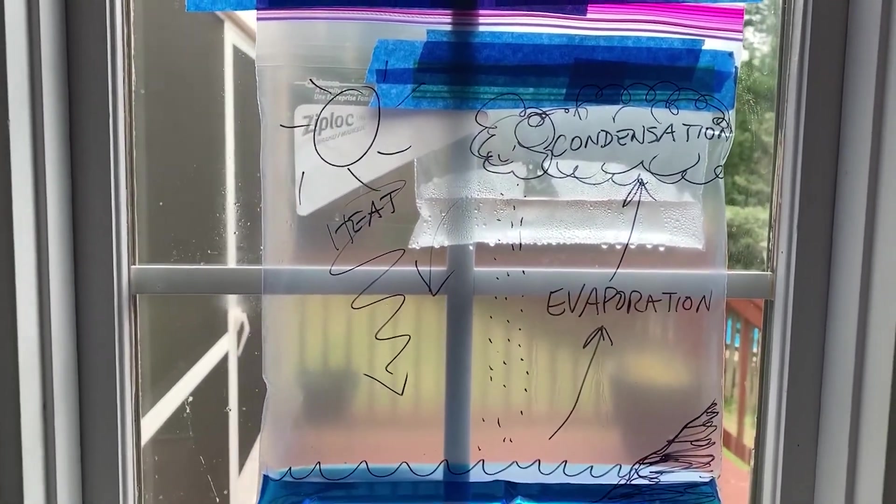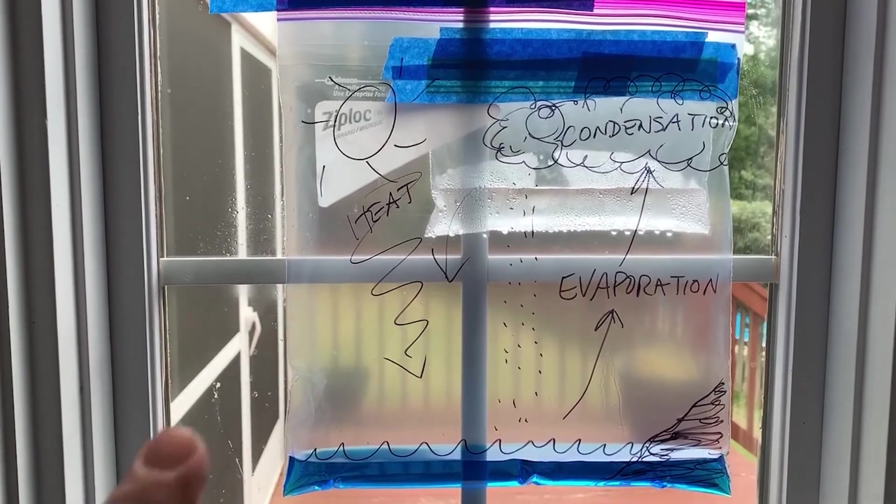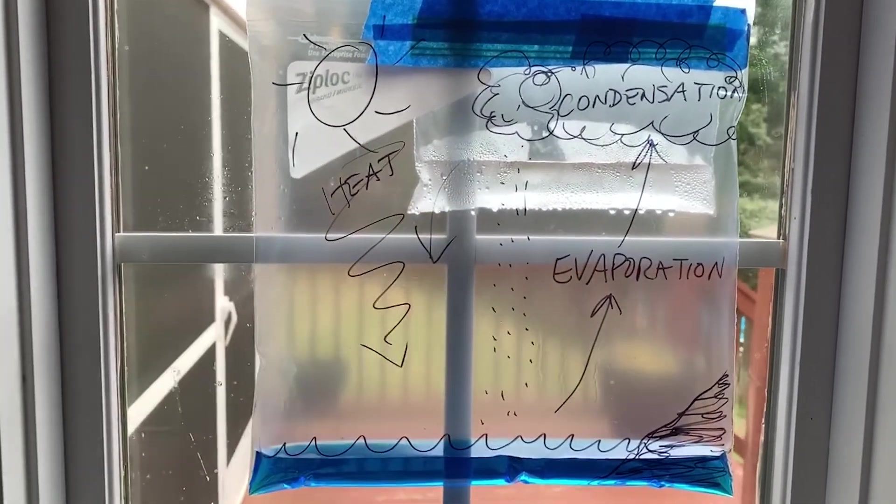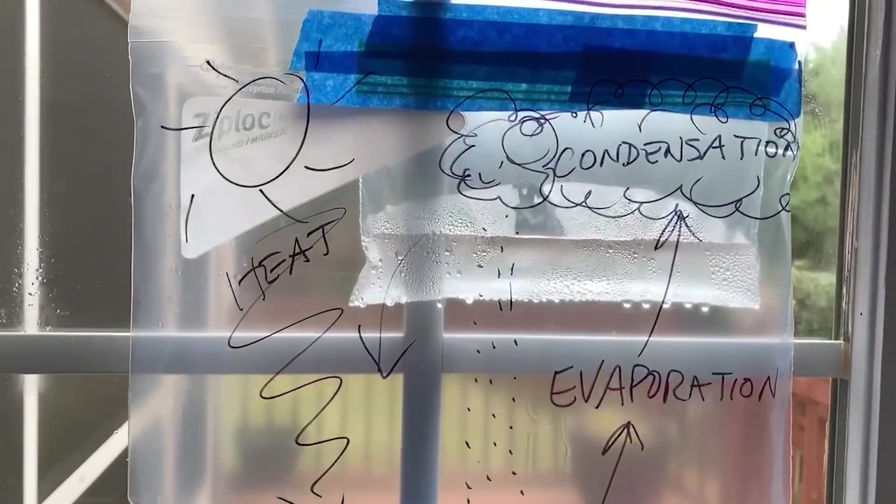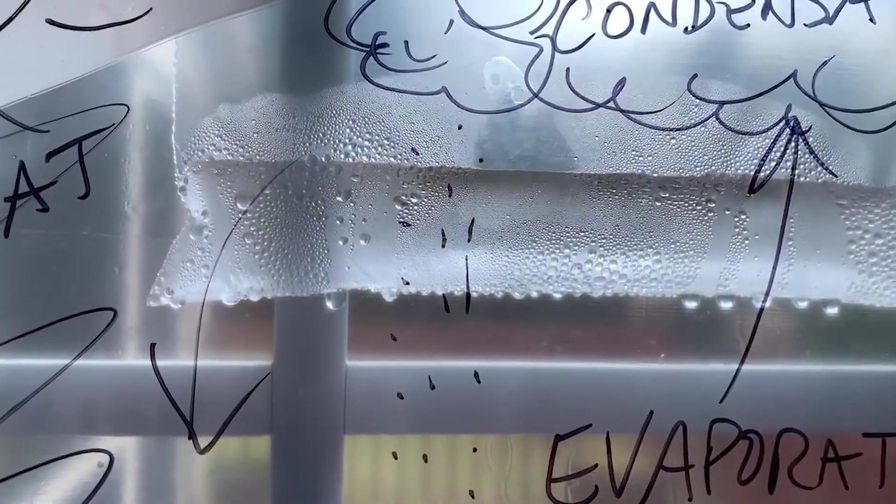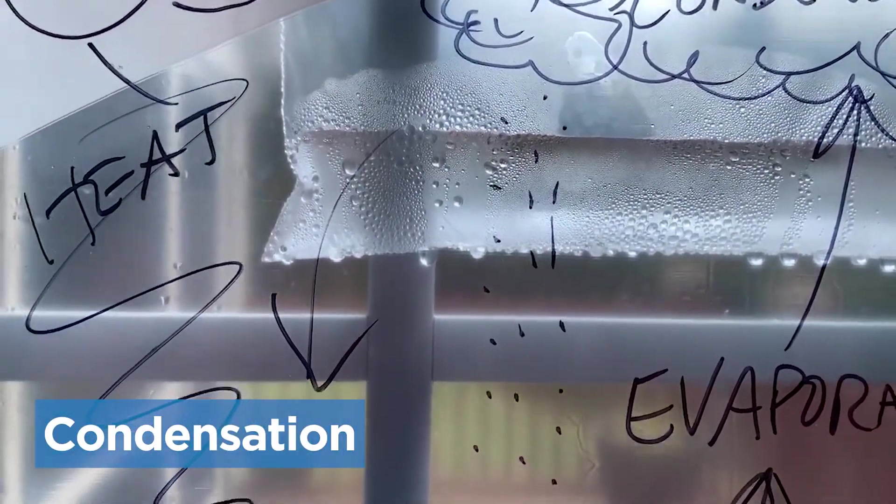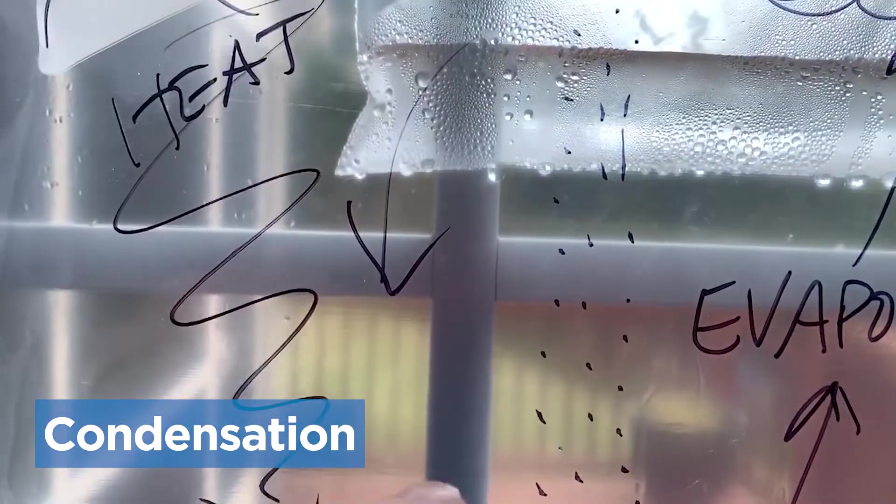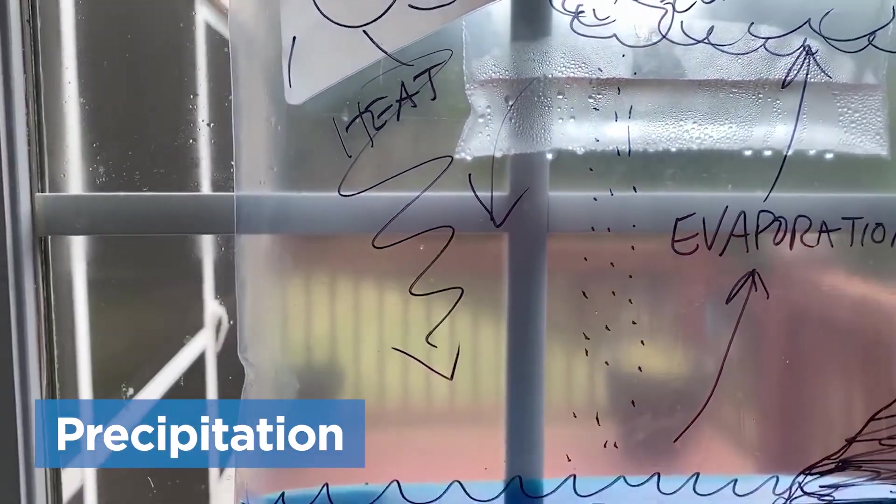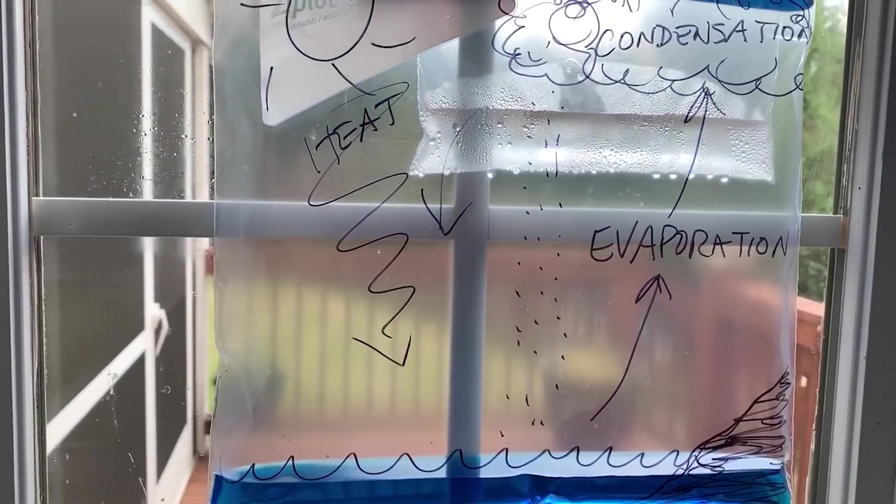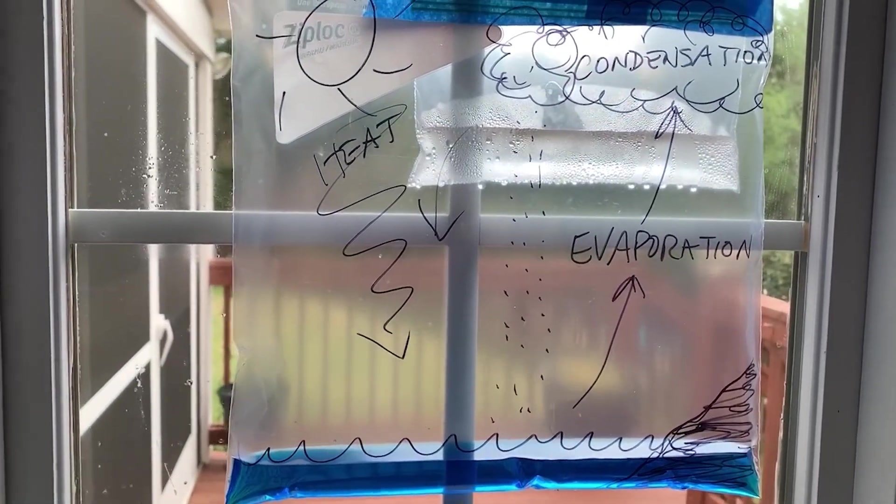So we've come back to check our water cycle in a bag and let's go inside of our bag and take a closer look at our cool spot that we put in there and we're starting to see a lot of condensation already. Eventually that's going to fall and become our precipitation. So keep an eye on your bag and let's see how it goes. Thanks for being with us.